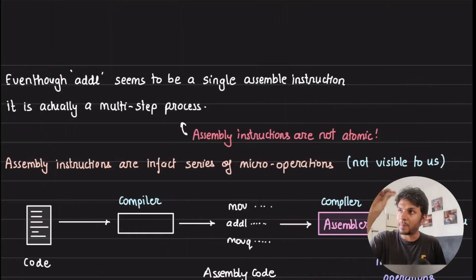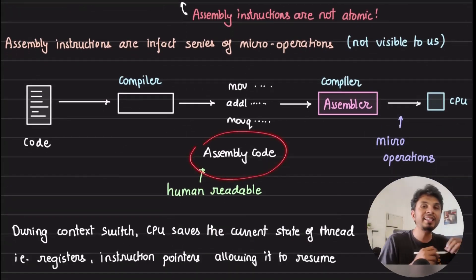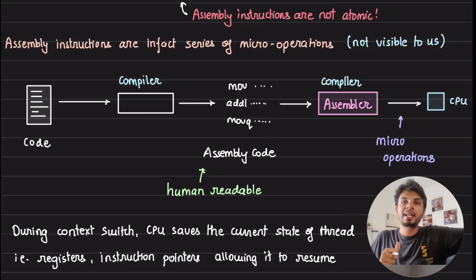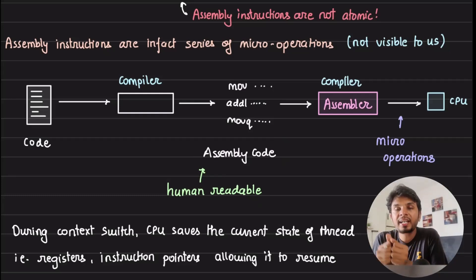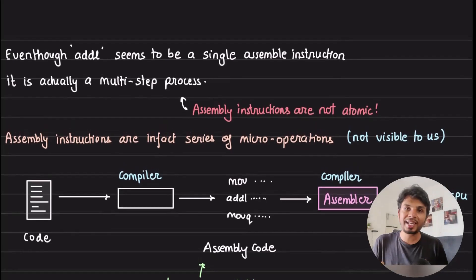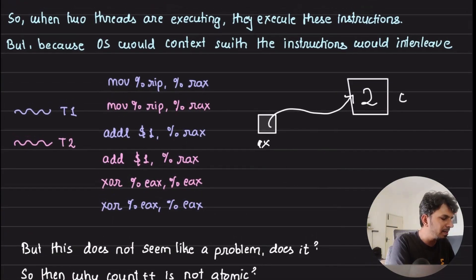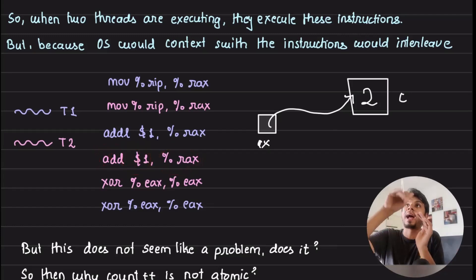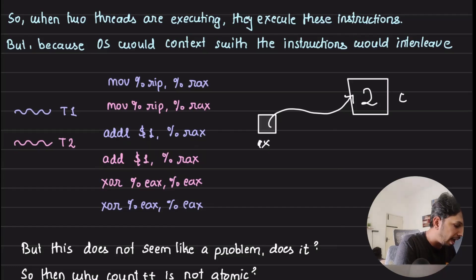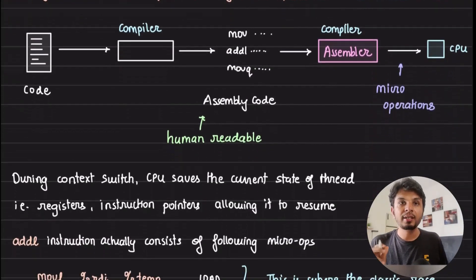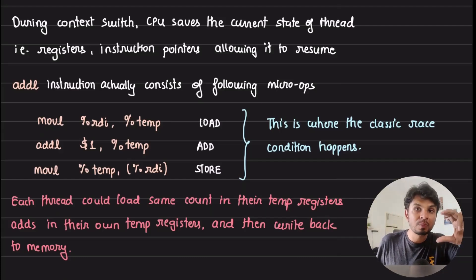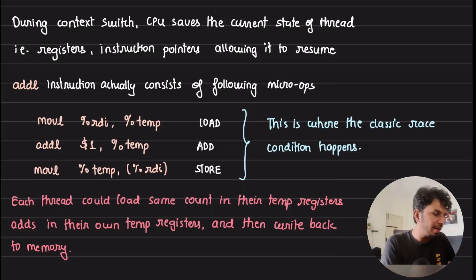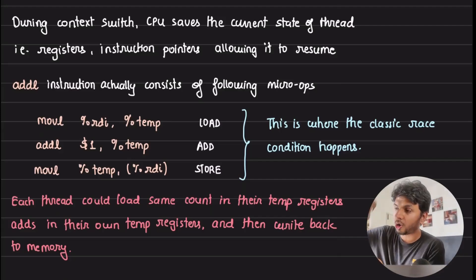The assembly language we're seeing is human-readable code generated by gcc. After this, gcc uses an assembler to create the actual machine-level code executed on the underlying CPU. The instruction addl, which looks simple and human-readable — 'add this value to this register' — internally splits into three micro-operations. This one addl instruction in the assembly output actually consists of three micro-operations.